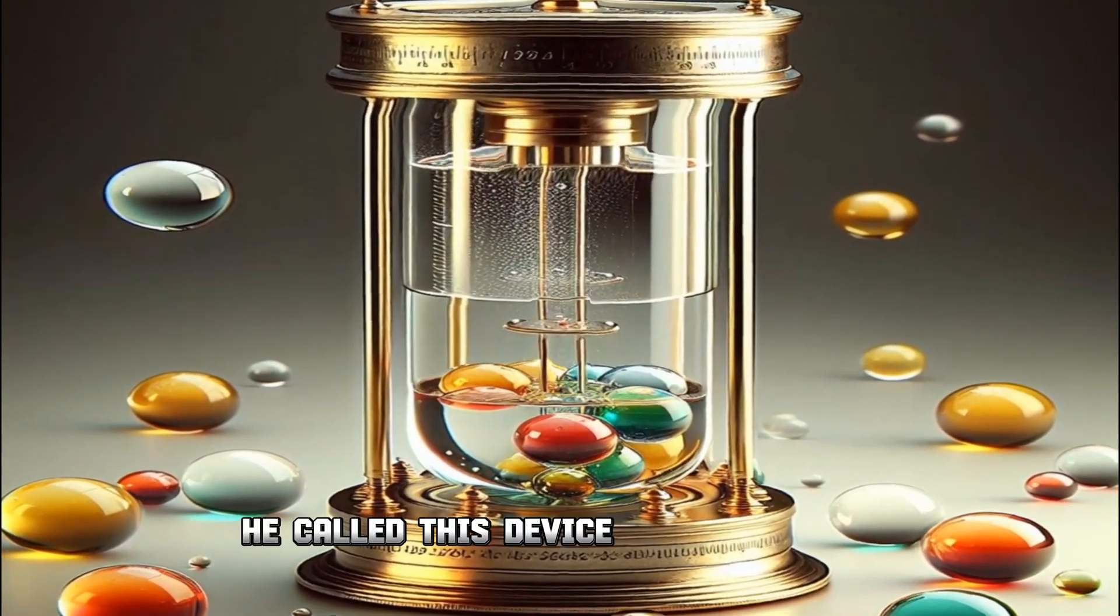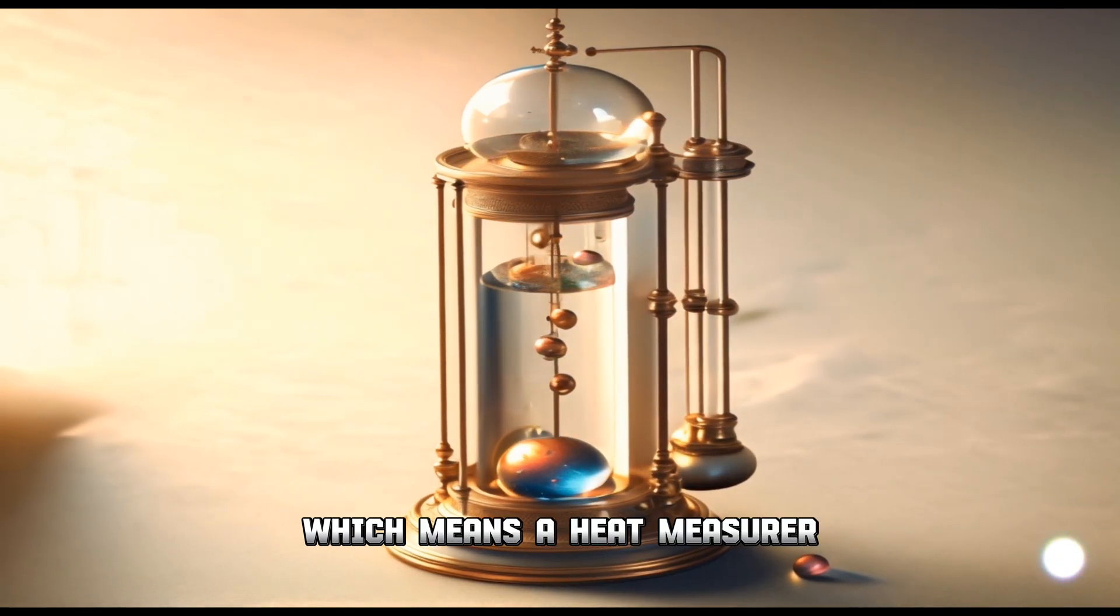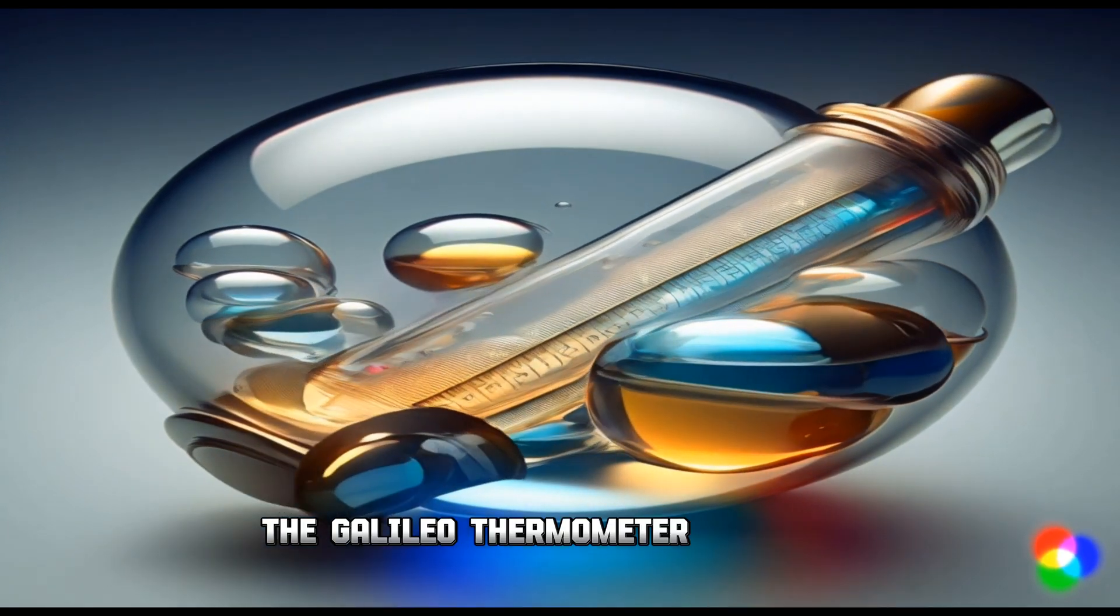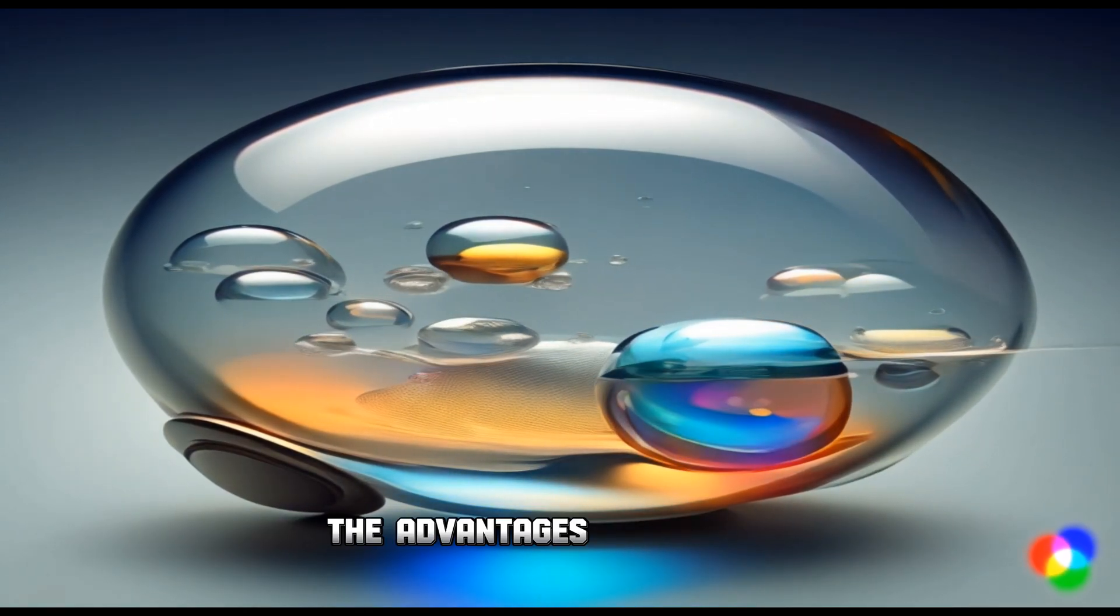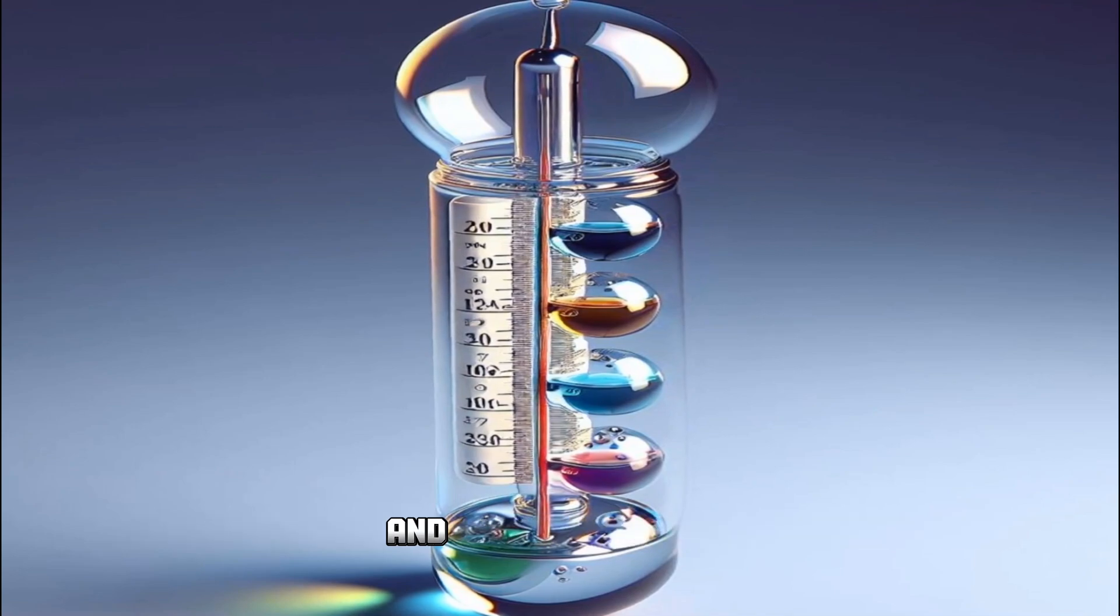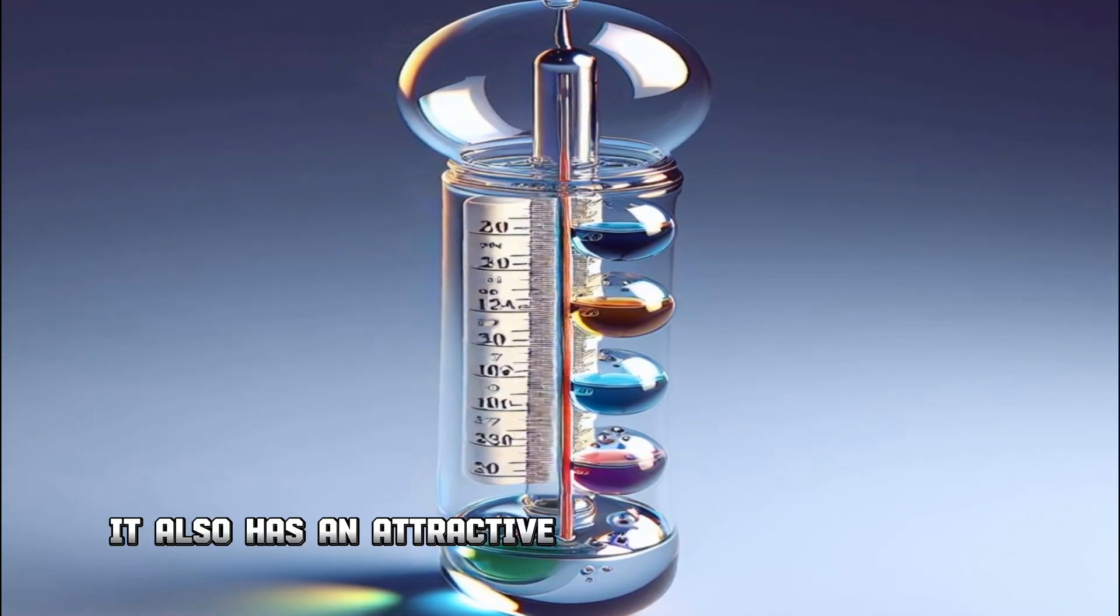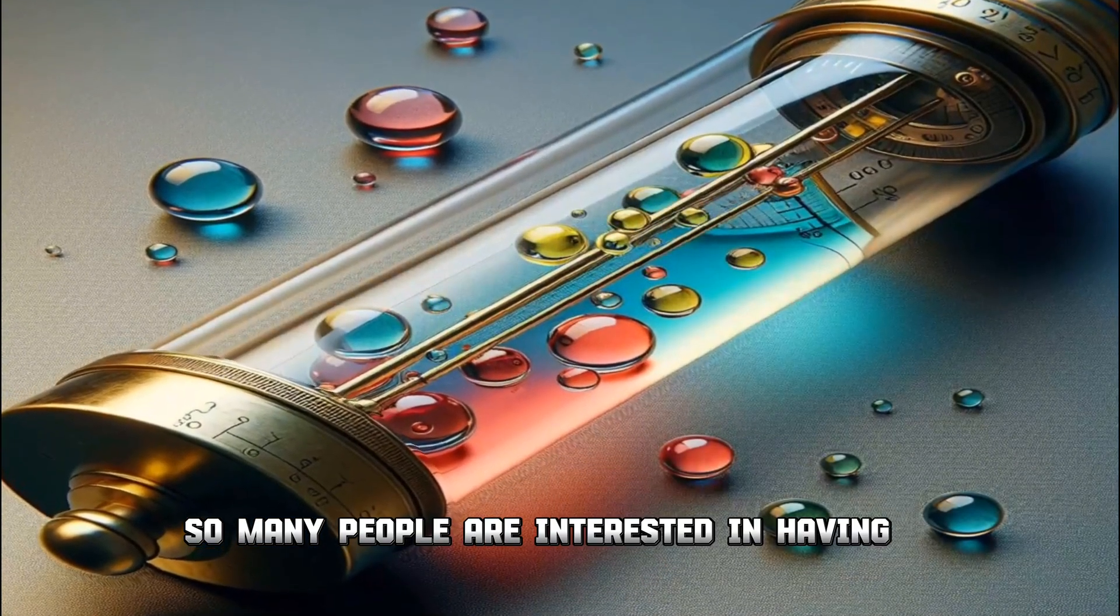He called this device a thermometer, meaning a heat measurer. The Galileo thermometer has advantages and disadvantages. The advantages are that it can measure air temperature quite accurately and is easily readable. It also has an attractive appearance, making many people interested in having one.